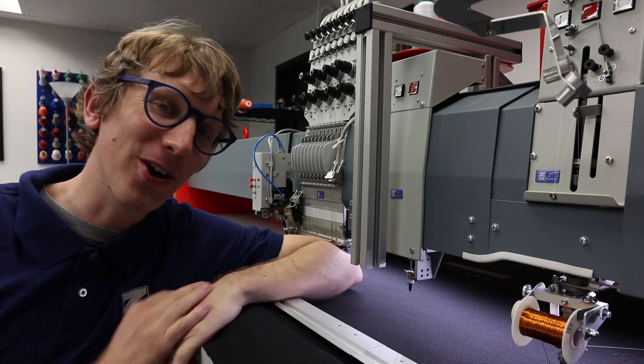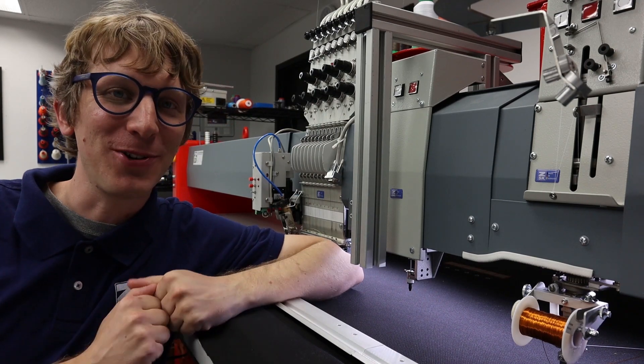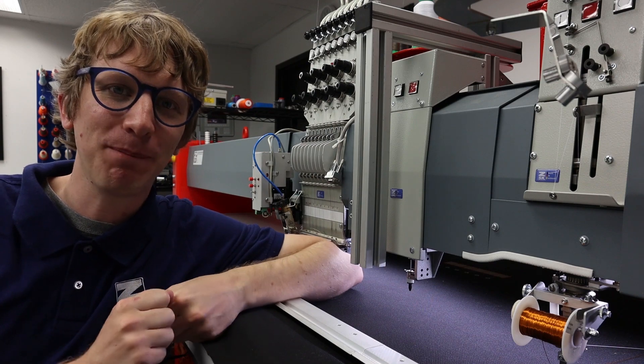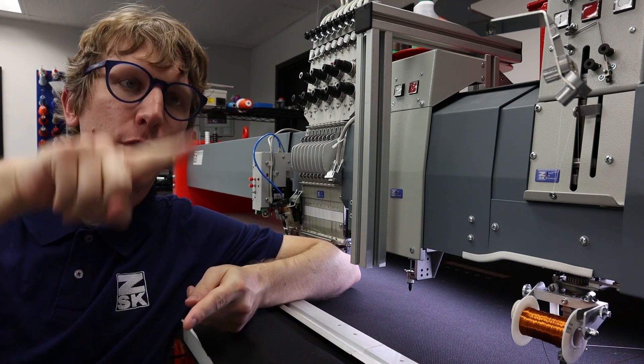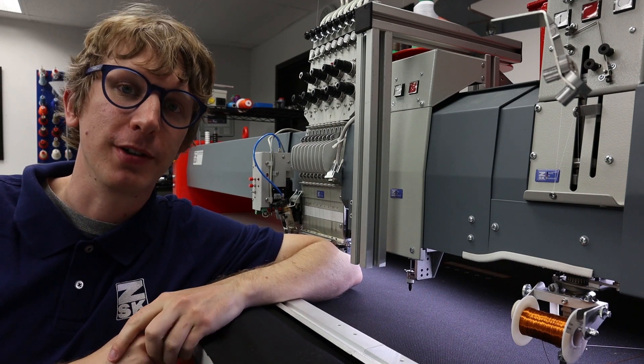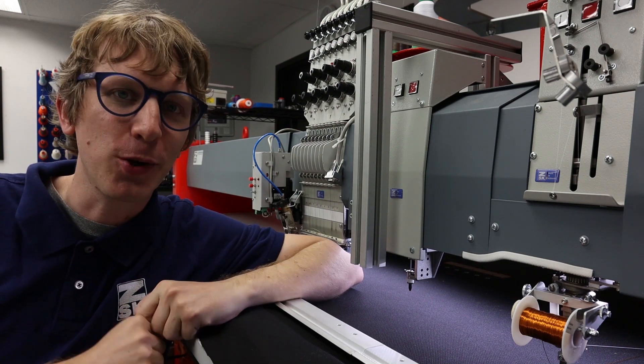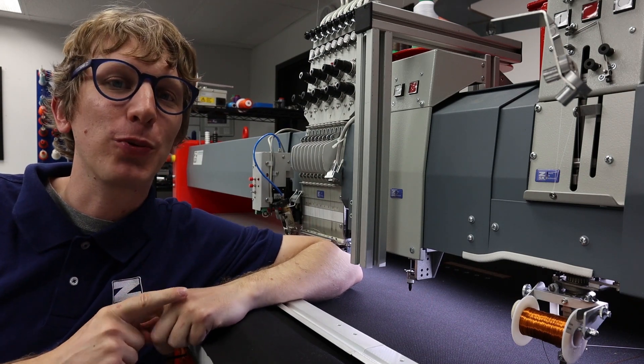And here we have our K-head. Our K-head allows us to do chenille embroidery or moss embroidery and chain stitching. Moss and chenille embroidery create loops or pile structures. These pile structures are very soft and have some interesting technical applications when we use them to create electrodes.